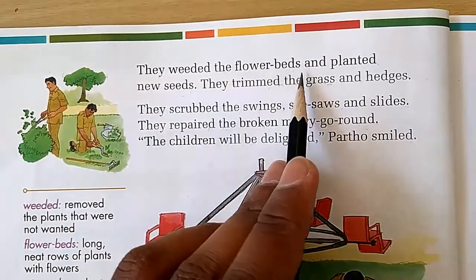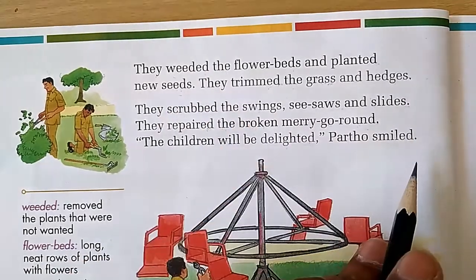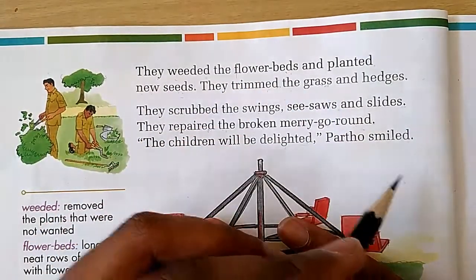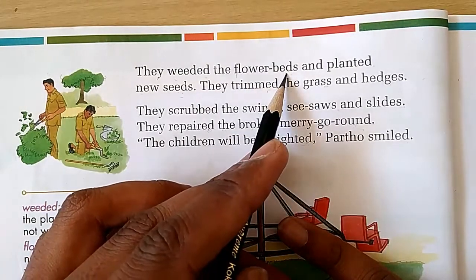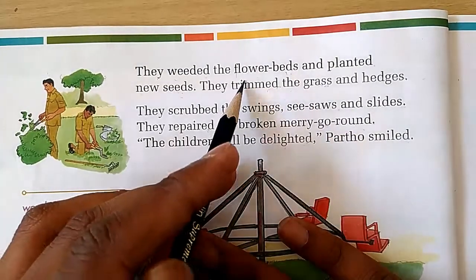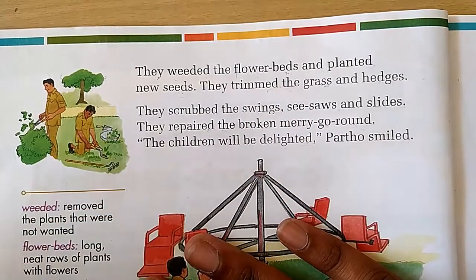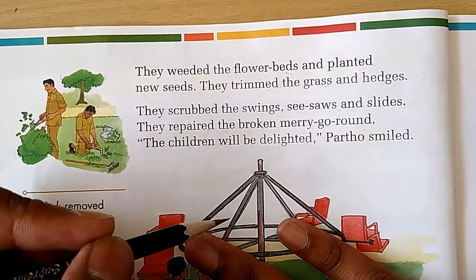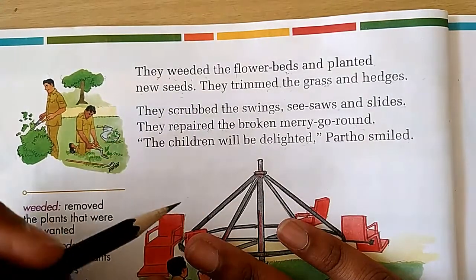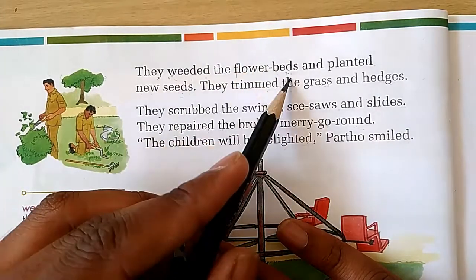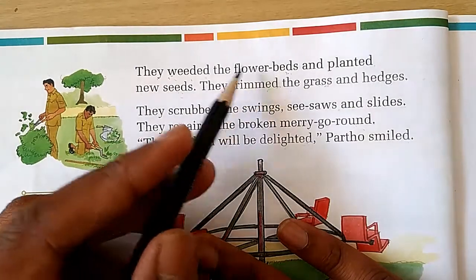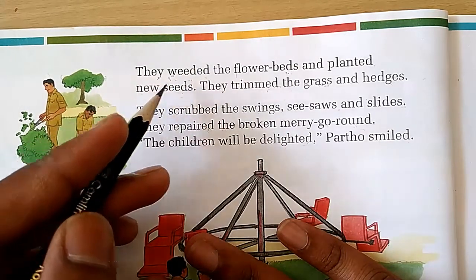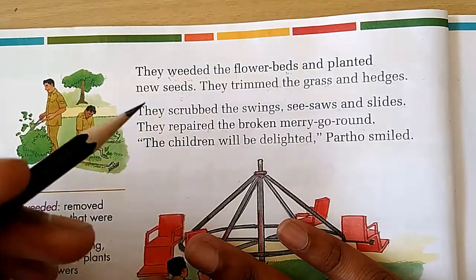Partho and his friends weeded the flower beds and planted seeds in their place. Flower beds are the areas where flowers are grown. Sometimes unwanted flowers grow there too. When we cut those unwanted plants, it is called weeding. So the flower beds were weeded, and new seeds were planted so that new plants would grow.